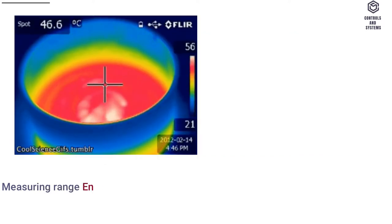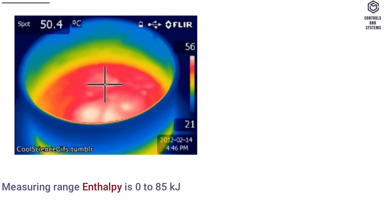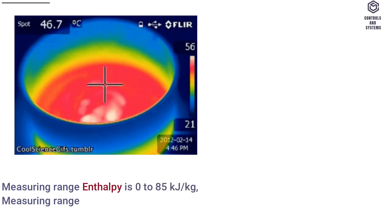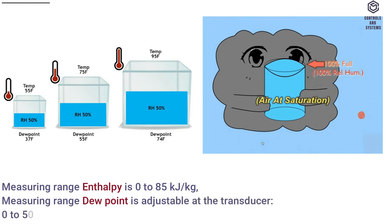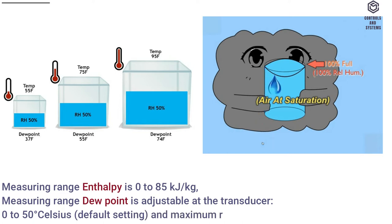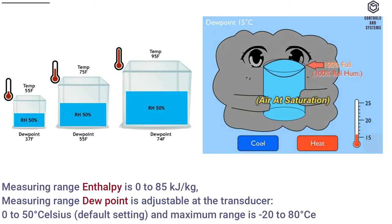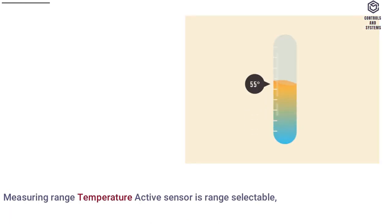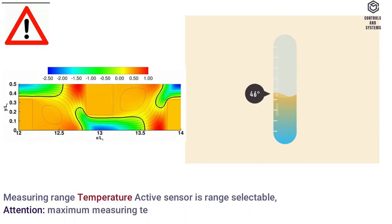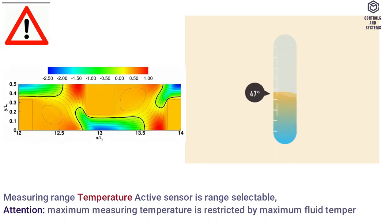Measuring range enthalpy is 0 to 85 kJ/kg. Measuring range dew point is adjustable at the transducer: 0 to 50°C default setting, and maximum range is −20 to 80°C. Measuring range temperature active sensor is range selectable — note: maximum measuring temperature is restricted by maximum fluid temperature.